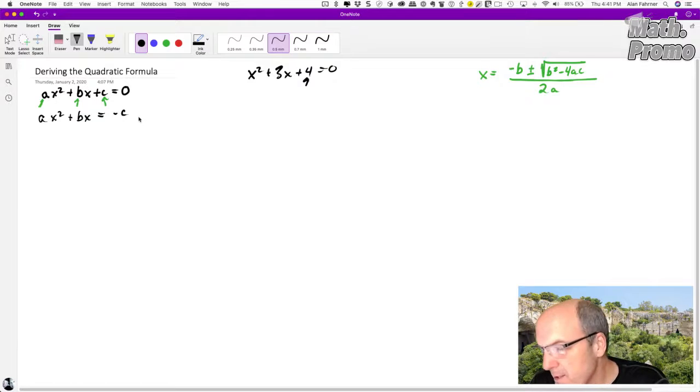To complete the squares, you can't have anything in front of x squared. So we need to get rid of that A. We've got to divide by it. So then you end up, if you divide Ax squared by A, you get x squared plus b over a x equals negative C over A.